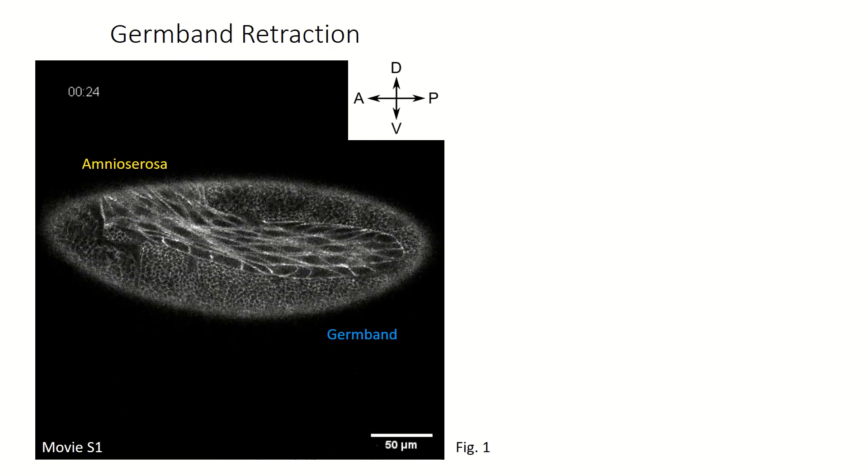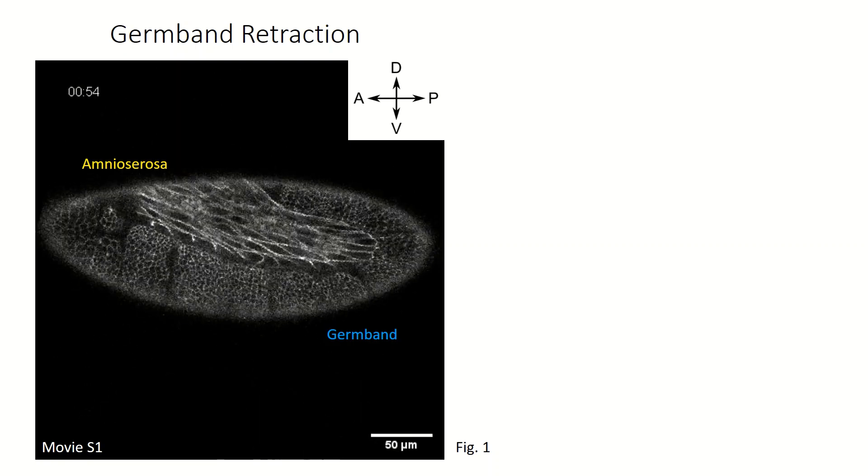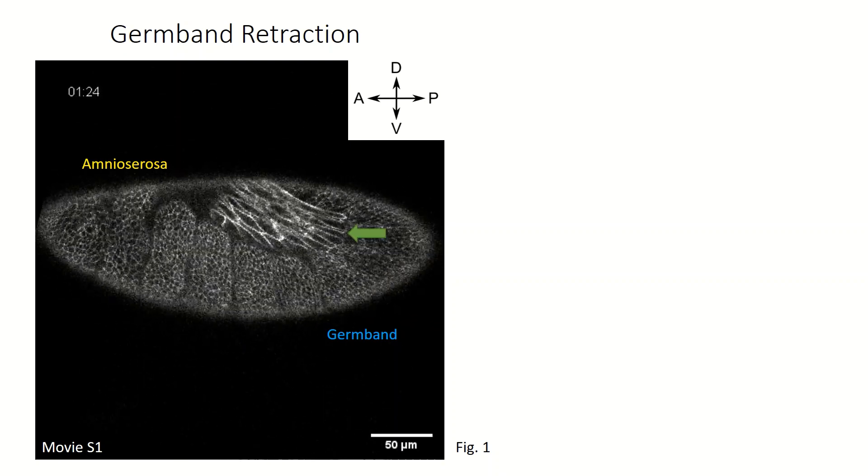To do so, the tug-of-war between these two tissues must pull differently in different locations, towards the tail end on the embryo's back and towards the head on the embryo's side.